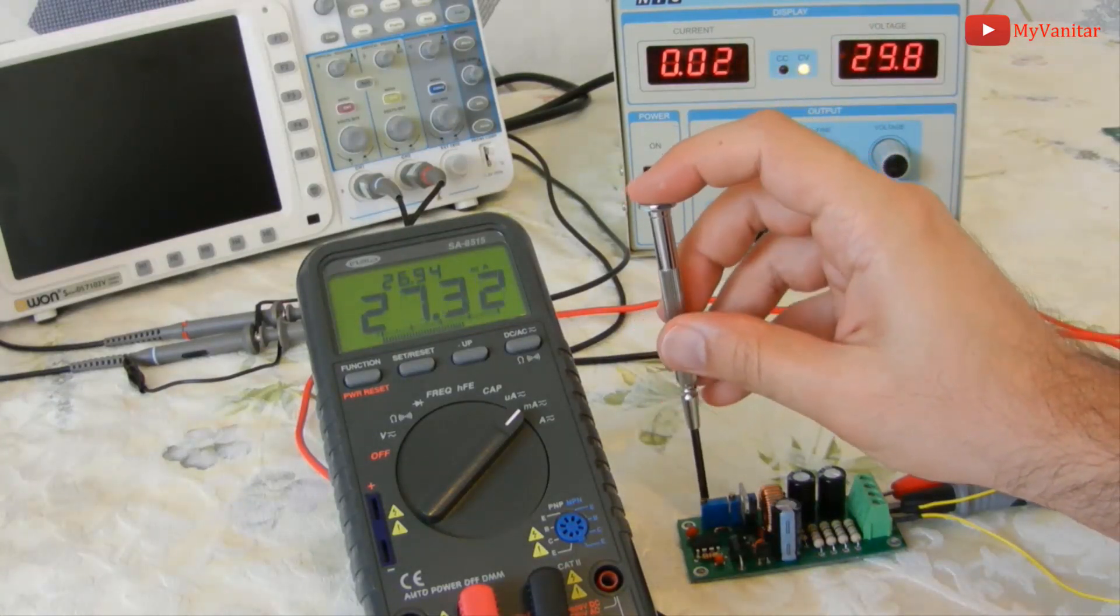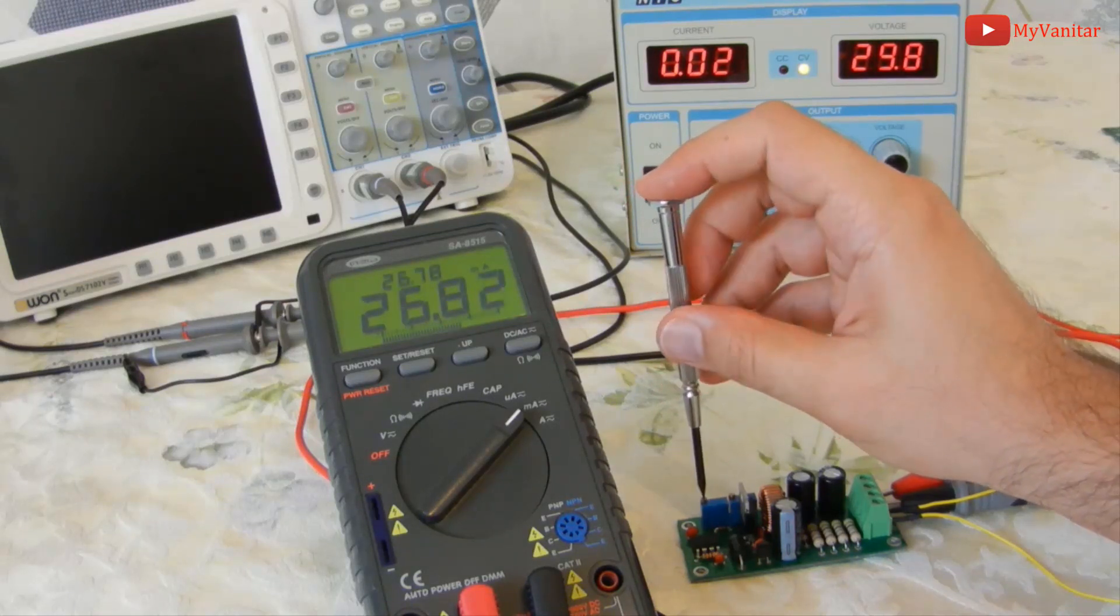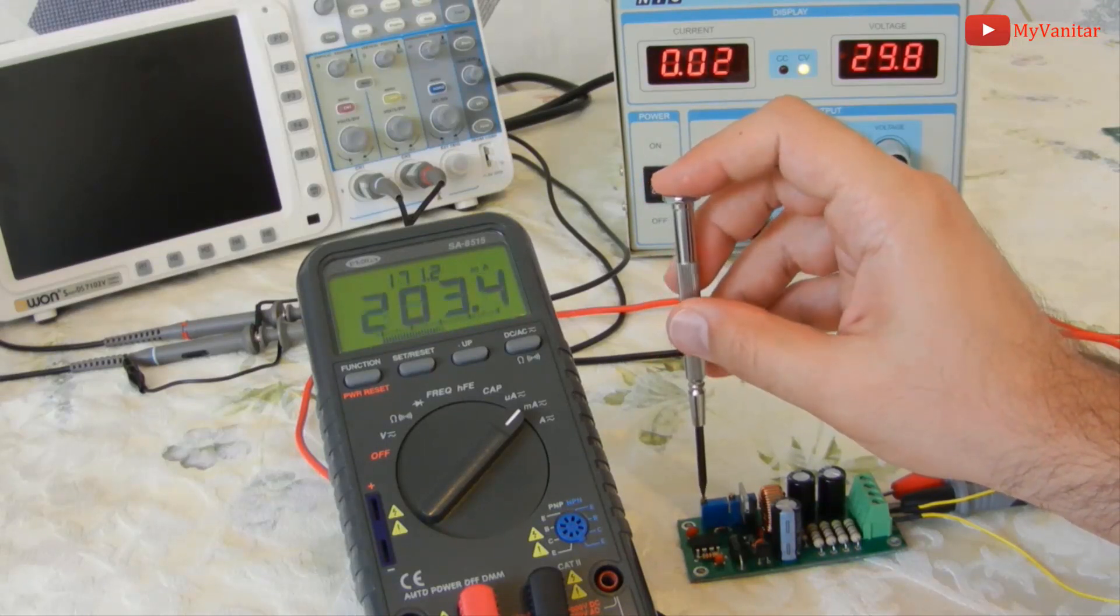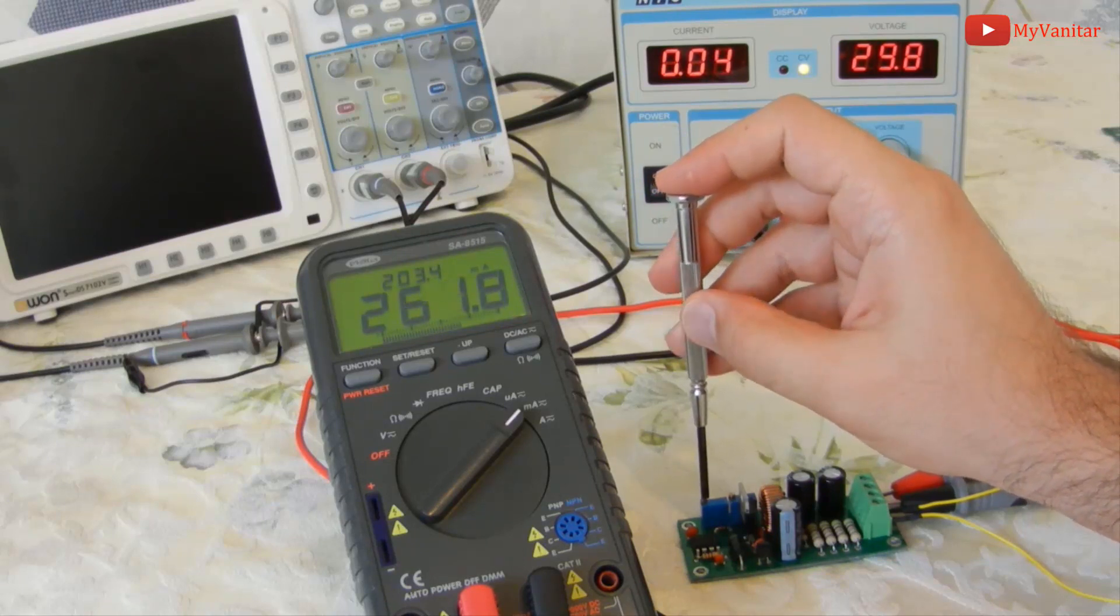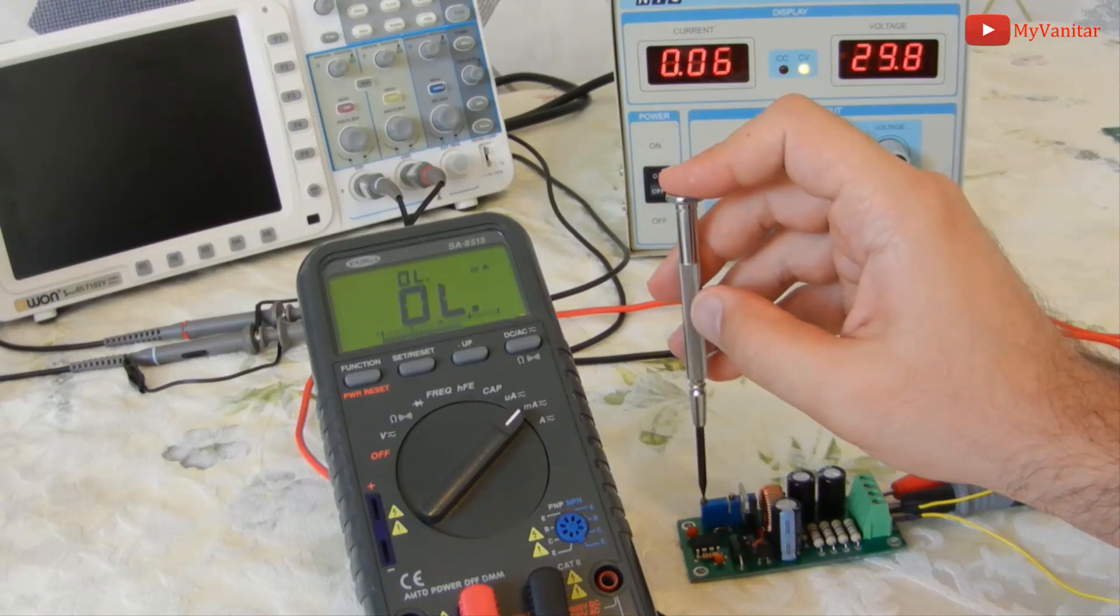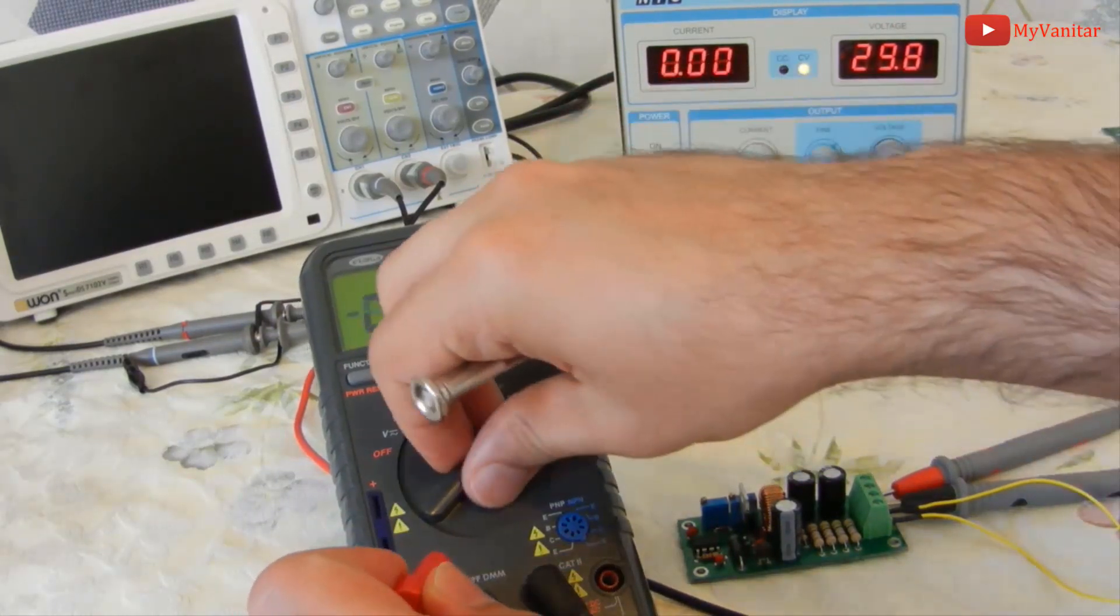Now I turn the R7 potentiometer to increase this limit. As you see, by turning the potentiometer, the current limit increases. Now, 120 goes to 200 and 300. Now maybe I'm gonna pass the multimeter threshold. As you see, I passed the limit. I have to remove the probe and put it on the high current measurement path.